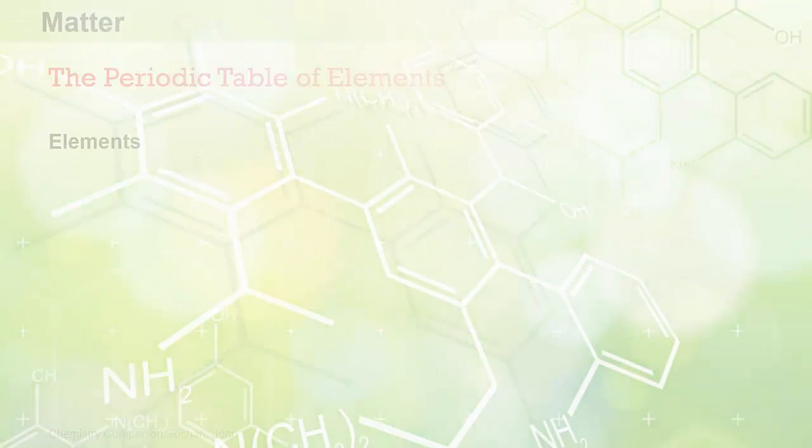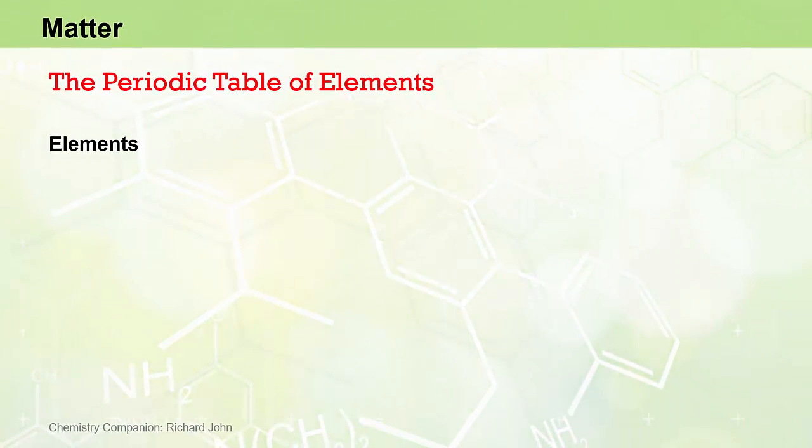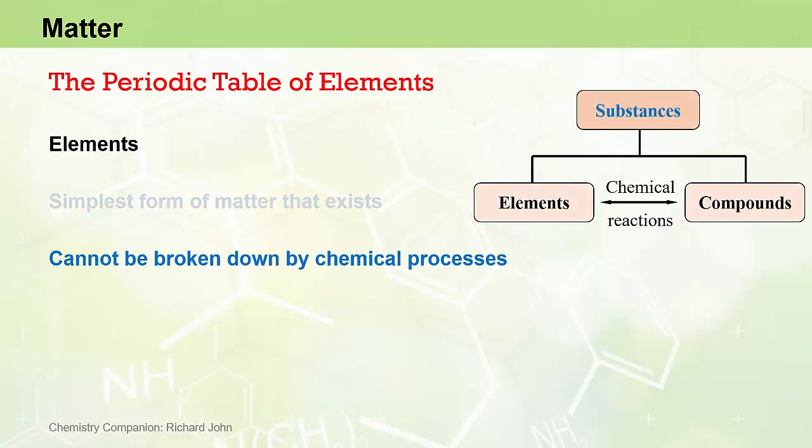But before we launch into a description of the periodic table of the elements, let's remind ourselves a bit about elements. We have already noted that, as far as we chemists are concerned, elements are the simplest form of matter that exists and they cannot be broken down into other substances by chemical means.